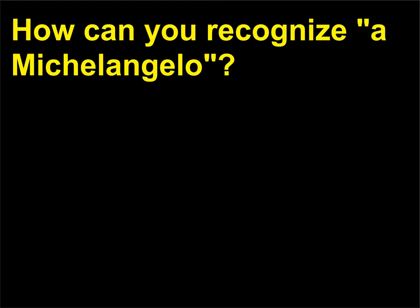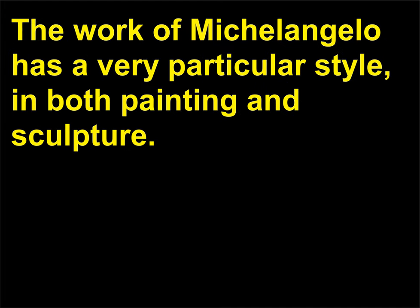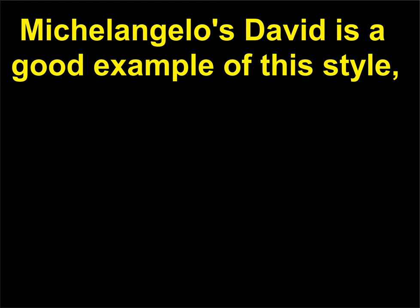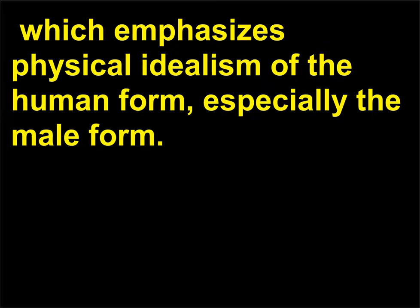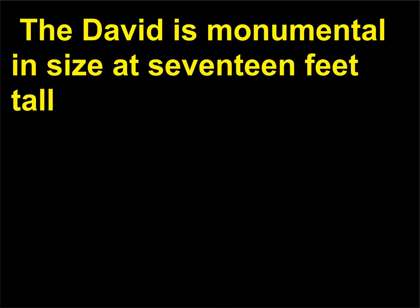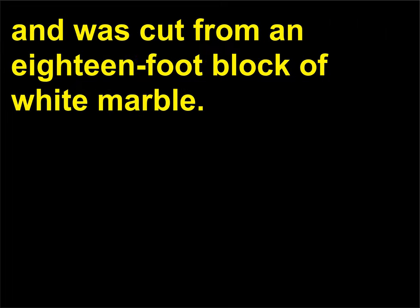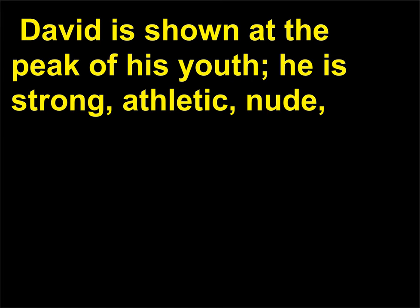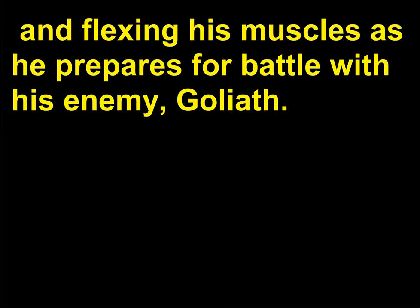How can you recognize a Michelangelo? The work of Michelangelo has a very particular style in both painting and sculpture. Michelangelo's David is a good example of this style, which emphasizes physical idealism of the human form, especially the male form. The David is monumental in size at 17 feet tall, and was cut from an 18-foot block of white marble. David is shown at the peak of his youth — he is strong, athletic, and nude, flexing his muscles as he prepares for battle with his enemy, Goliath.